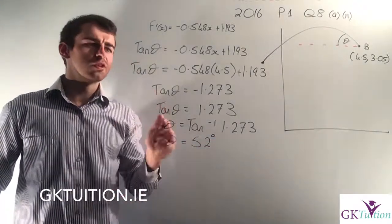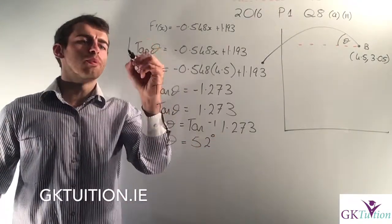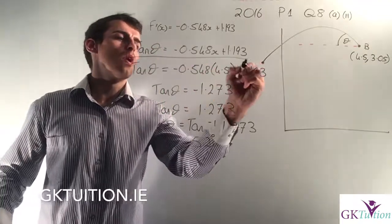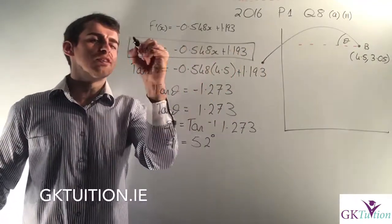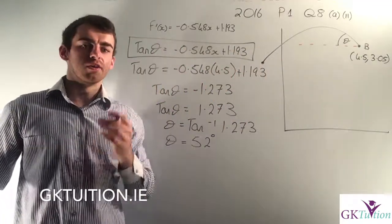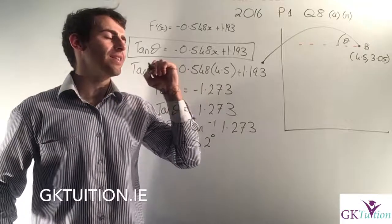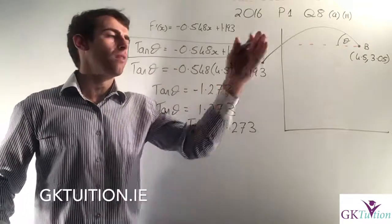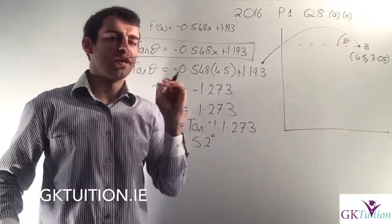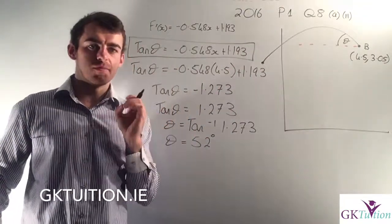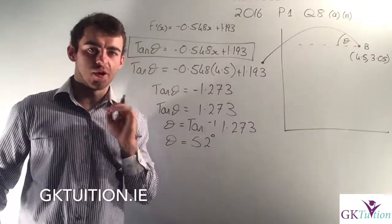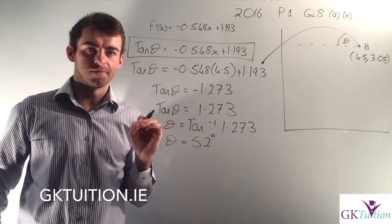That's an important bit of theory: when you differentiate, you're not only getting the slope, but you're also getting the tan of the angle that the function makes with the horizontal line.